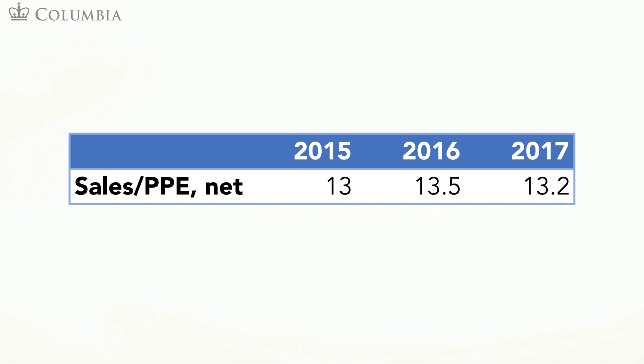What does this ratio mean? This ratio tells you the dollar in sales MANOA generates for each dollar in net PP&E. Think about it this way: MANOA uses presses to punch cans out of aluminum coil. Imagine the only fixed assets are the presses. A higher net PP&E corresponds to more presses. The more presses MANOA has, the more cans it can manufacture, leading to higher sales.